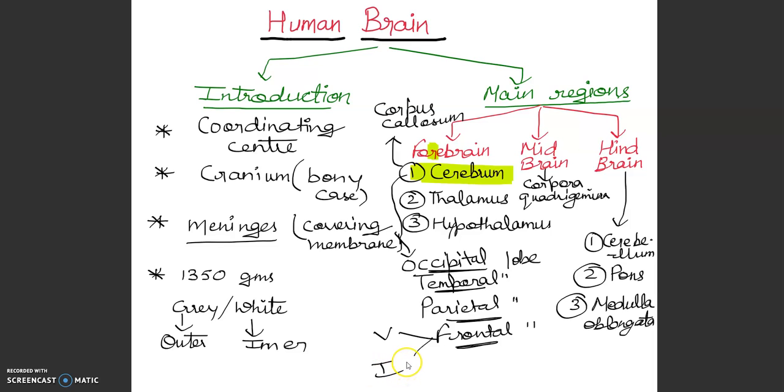The next step is to move on to midbrain. There are two parts of thalamus and hypothalamus. Thalamus is the center part of forebrain.